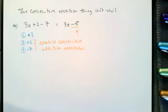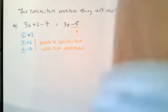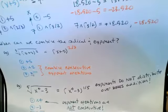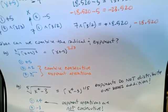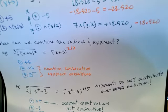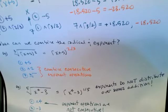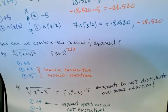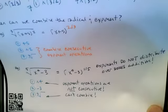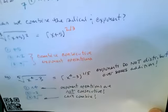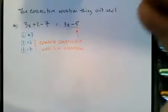The consecutive operation thing isn't new — we just need to be able to determine when we can do it. If a square and cube root happen consecutively, we can combine those exponent operations into a 2/3 exponent. But if those exponents are separated by an addition, since exponents do not distribute over addition, we cannot combine them.